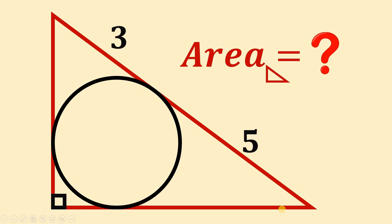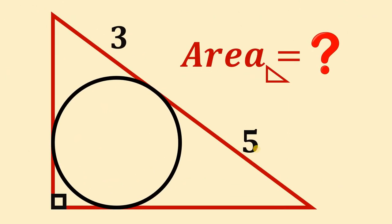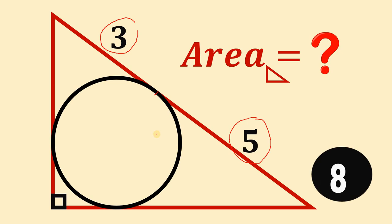Can you solve this geometry challenge? Here's the question. Given this right triangle, the hypotenuse is divided by segment 3 and segment 5. The question is: what is the area of this triangle? You can pause this video if you want to give this problem a try.